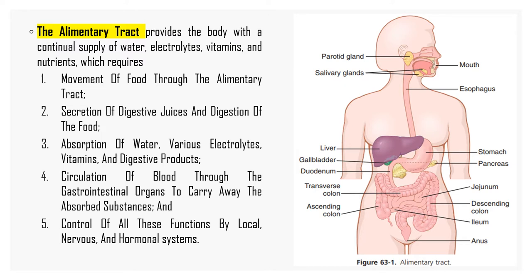Each part is adapted to its specific function. Some parts are for simple passage of food, such as the esophagus, and others for temporary storage of food, such as the stomach, and digestion and absorption occurs in the small intestine.